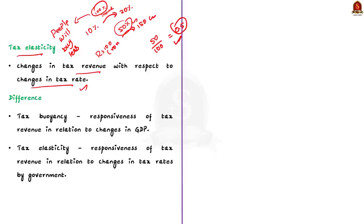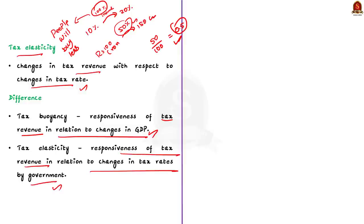Dividing 50 percent by 100 percent we get 0.5, and this 0.5 is called tax elasticity. Tax buoyancy is the responsiveness of tax revenue in relation to changes in GDP, whereas tax elasticity is the responsiveness of tax revenue in relation to changes in tax rate by the government. Unlike buoyancy which is related to GDP, elasticity is related to tax rates.